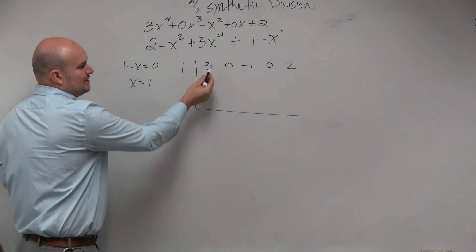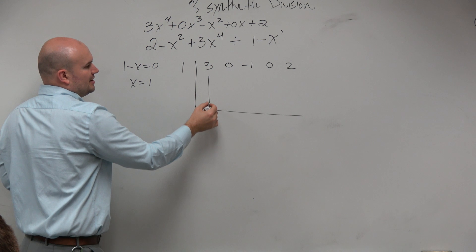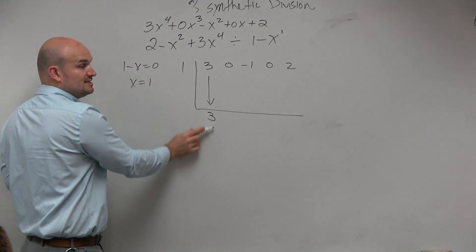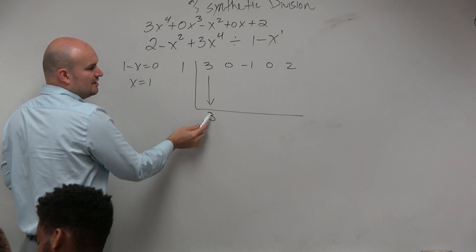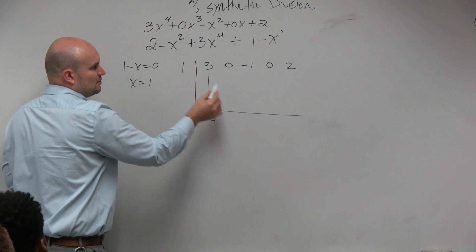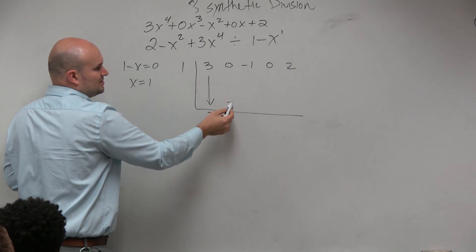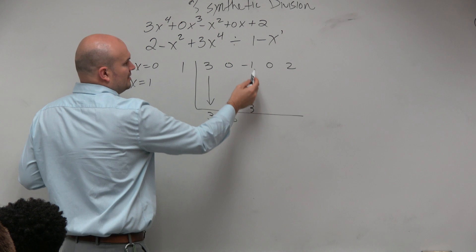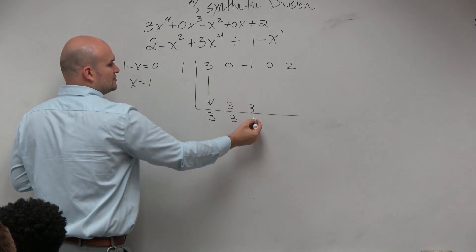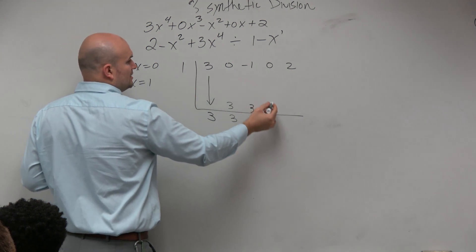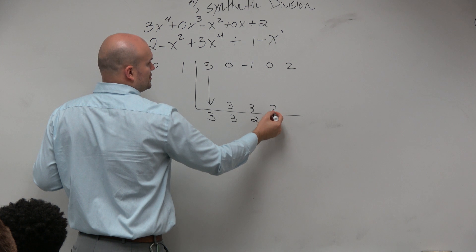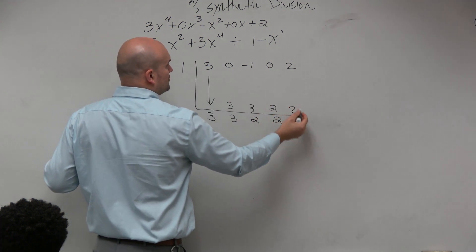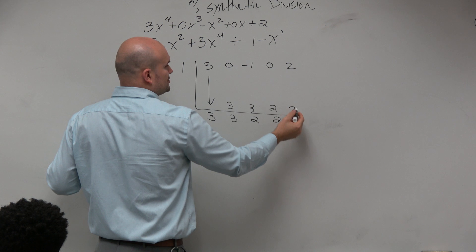Bring down the 3 — that's the freebie, everybody loves the freebie. Multiply on the diagonals, add on the verticals. 3 times 1 is 3. 0 plus 3 is 3. 3 times 1 is 3. Negative 1 plus 3 is 2. 2 times 1 is 2. 0 plus 2 is 2. 2 times 1 is 2. 2 plus 2 is 4.